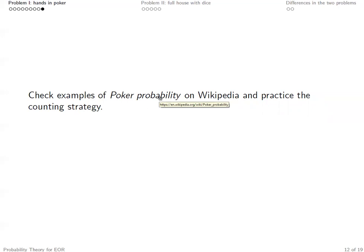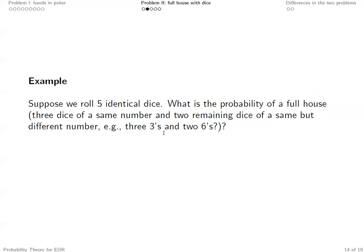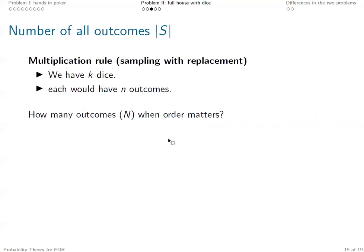There are so many different ways of counting, and it is fun. Now we've finished discussing problem one where order does not matter. Let's discuss problem two, where order matters — a full house with dice. Suppose we roll five identical dice. What is the probability of a full house? For example, you have three threes and two sixes. In this case, order matters. To apply naive probability, we again need the number of all possible outcomes and the number of outcomes in A.